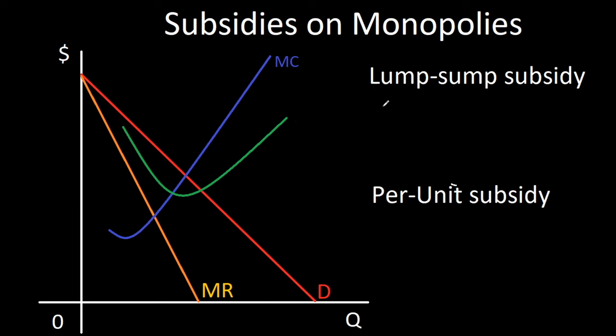Hey guys, GPA Jesus here. This video covers how a subsidy affects a monopoly, which we'll see on an econ test. Let's first learn what happens when we apply a per unit or lump sum subsidy to a monopoly, and then apply these concepts to a 2012 AP Microeconomics FRQ.